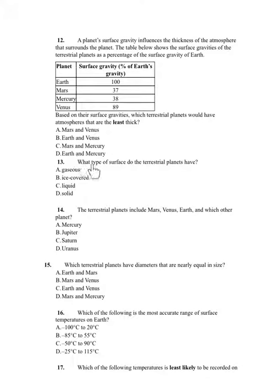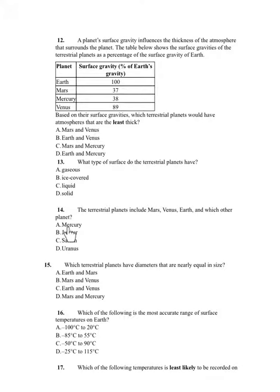Number 13. What type of surface do the terrestrial planets have? A. Gaseous. B. Ice covered. C. Liquid. D. Solid. Number 14. The terrestrial planets include Mars, Venus, Earth, and which other planet? A. Mercury. B. Jupiter. C. Saturn. D. Uranus. Number 15. Which terrestrial planets have diameters that are nearly equal in size? A. Earth and Mars. B. Mars and Venus. C. Earth and Venus. D. Mars and Mercury.